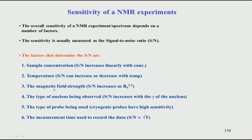The first and most important factor is the concentration of the sample. Signal-to-noise increases linearly with concentration. If you have a 10 millimolar sample and record another spectrum at 20 millimolar, the 20 millimolar sample will give twice the signal-to-noise, provided all other conditions — same spectrometer, same number of scans, same temperature — are kept constant. If you double the concentration, your signal-to-noise doubles.